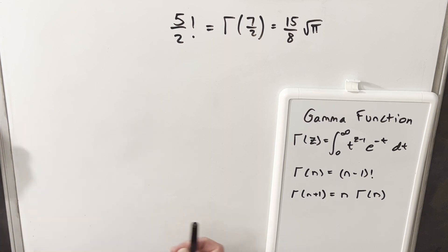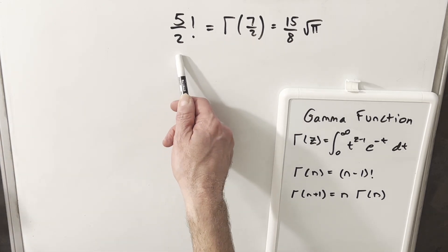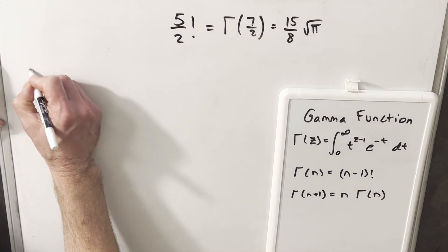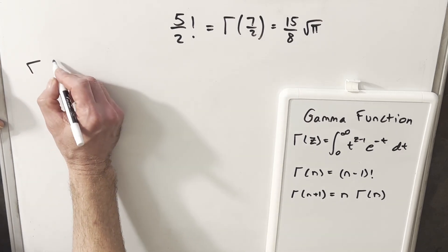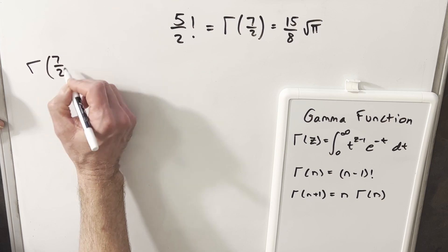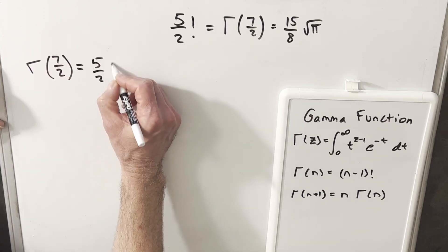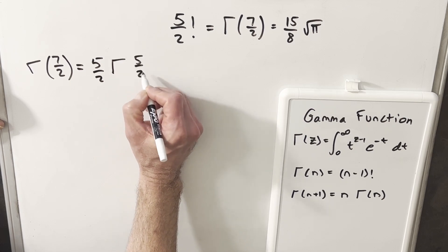One thing I wanted to go over really quick was if you're given this problem five half factorial or gamma of seven halves, how would you go about finding that without doing any integrals? You could remember a formula or the value, that's fine, and that's a perfectly fine way to do it. But what we can do is use this last formula. We have gamma of n plus one, so our n plus one is seven halves. So we can look at our gamma of seven halves value as just reducing it by one as five halves times gamma of five halves.